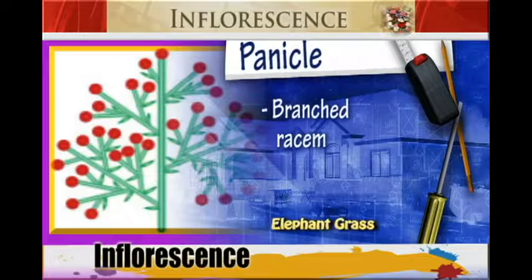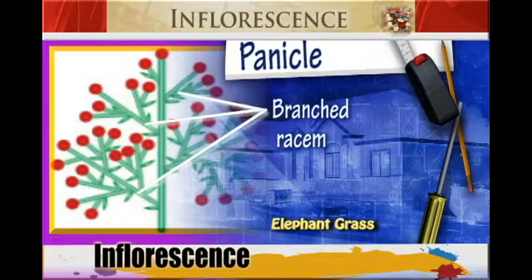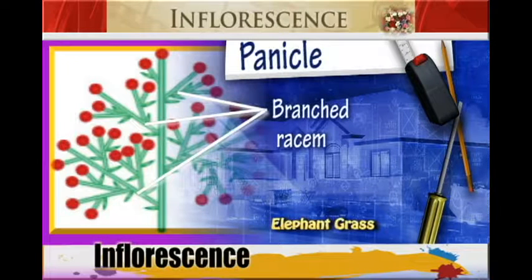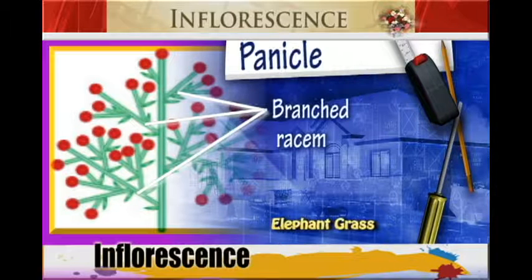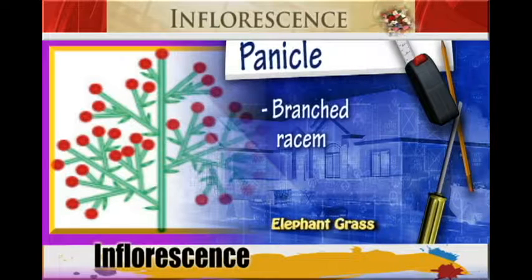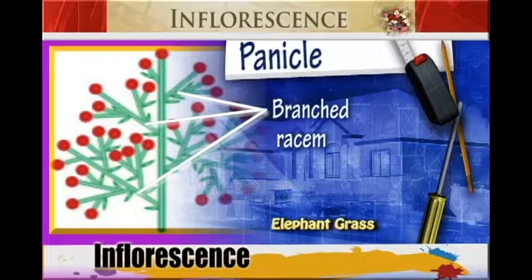We have another inflorescence — it is the Panicle, or Panicle inflorescence. It is a branched Raceme. It is branched but it is a Raceme, and we find it in Elephant Grass.